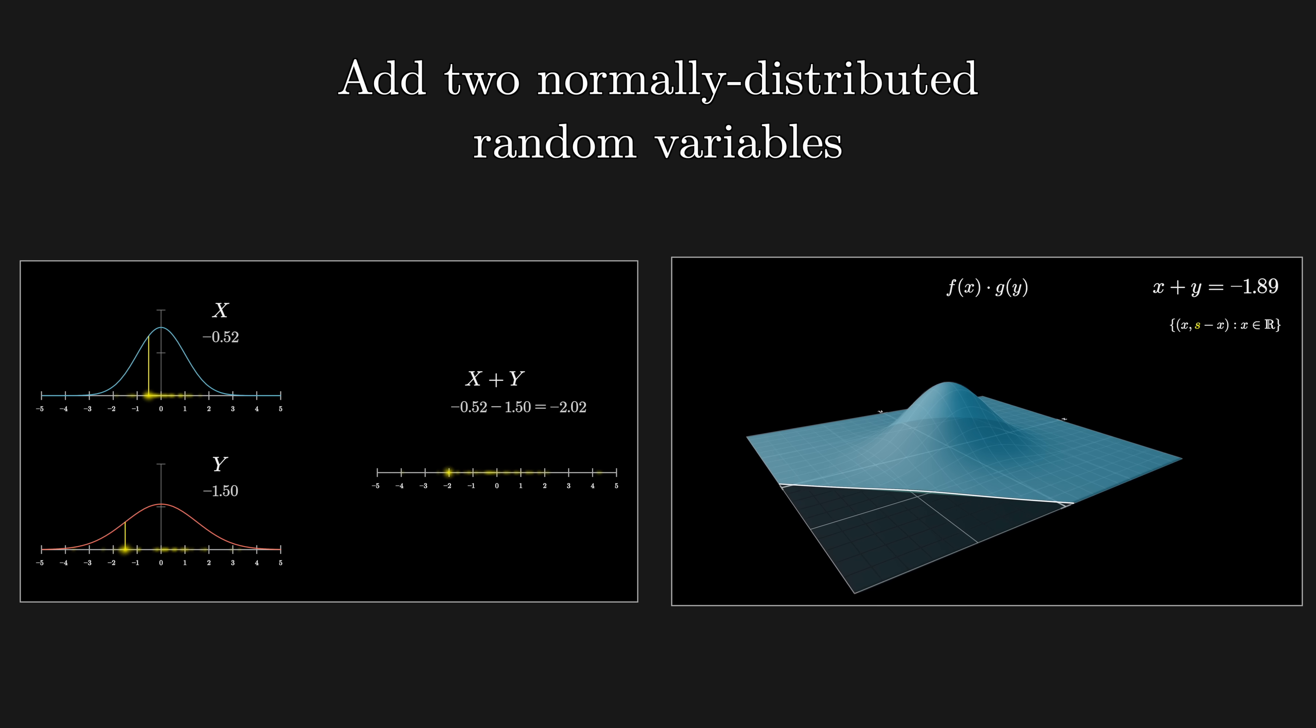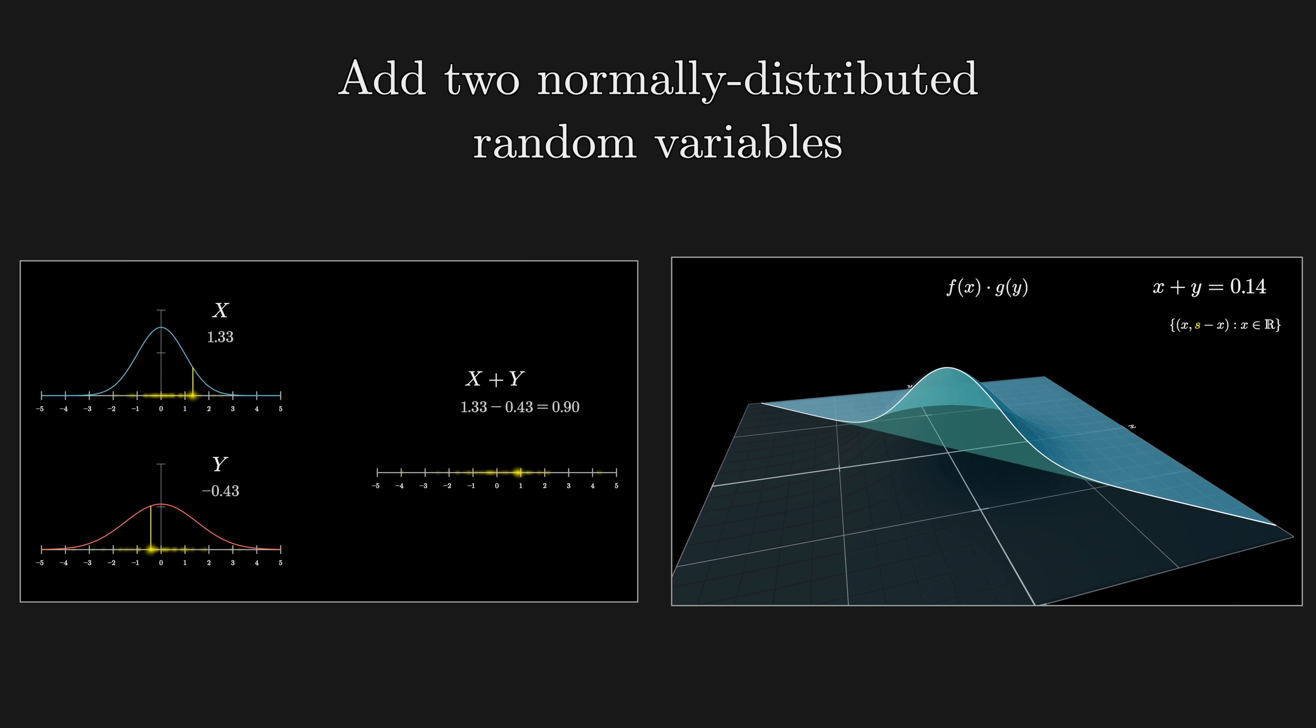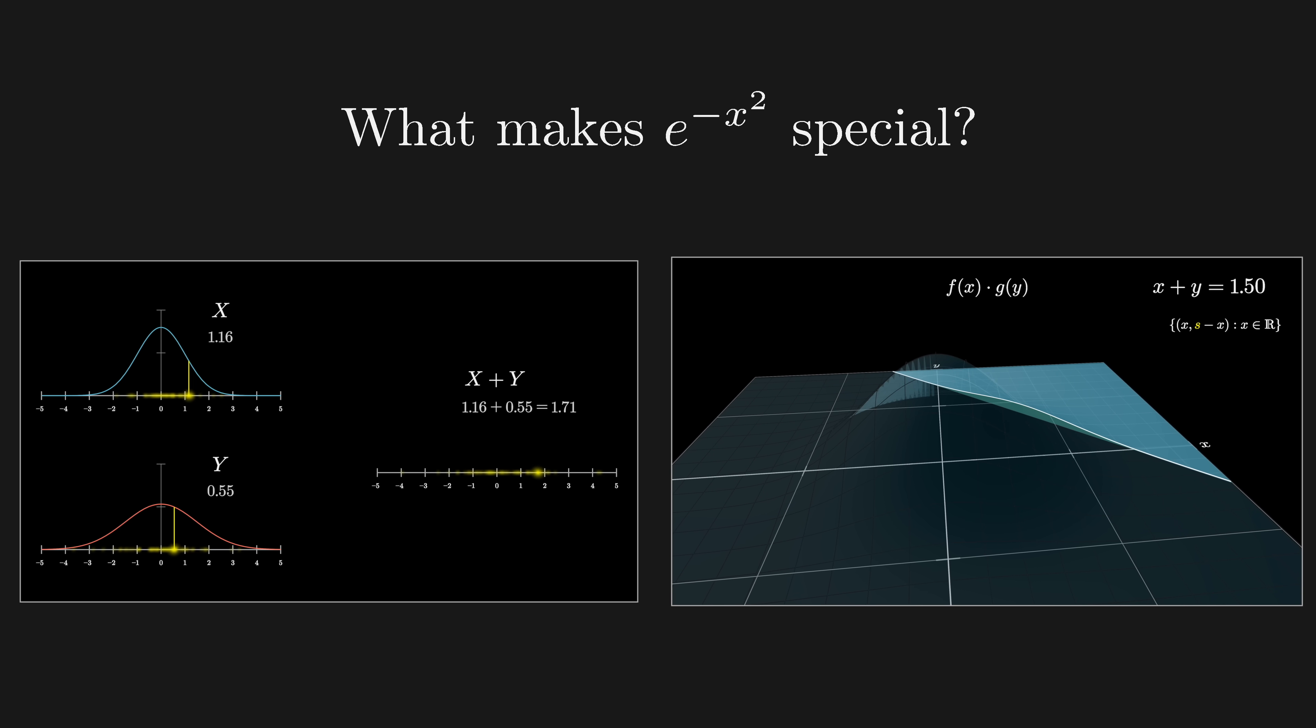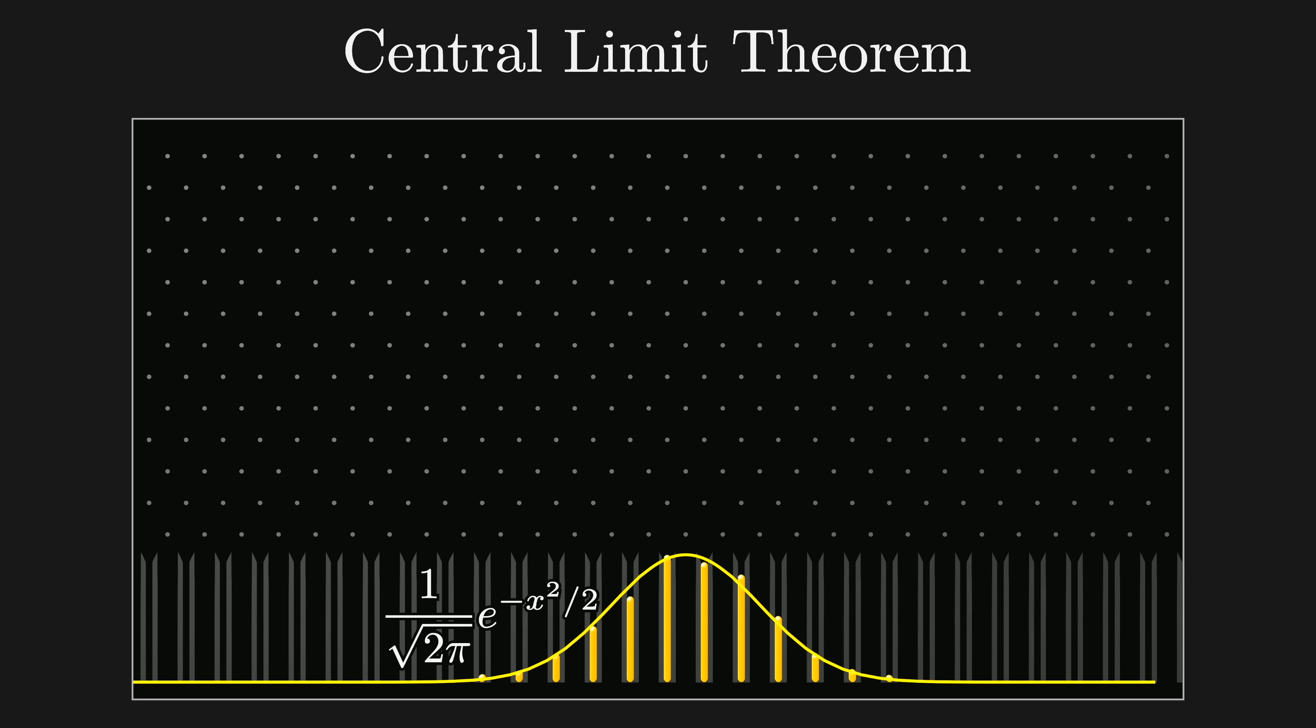I'd like to share an especially pleasing visual way that you can think about this calculation, which hopefully offers some sense of what makes the e to the negative x squared function special in the first place. After we walk through it, we'll talk about how this calculation is one of the steps involved in proving the central limit theorem. It's the step that answers the question of why a Gaussian, and not something else, is the central limit. But first, let's dive in.